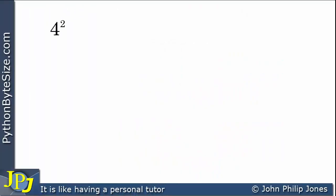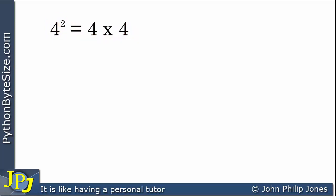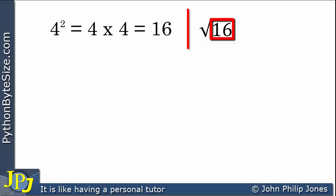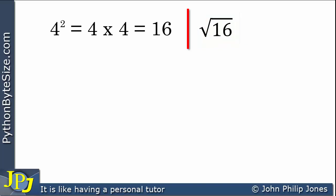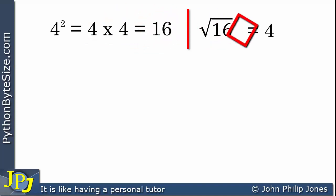Consider 4 squared mathematically: you take the value of 4 and multiply it by another 4 — two values as defined by the index — giving 4 times 4 equals 16. Now I would like to find the square root of 16. I need to ask: what number, multiplied by itself, gives 16? Since 4 times 4 is 16, the square root of 16 is 4.